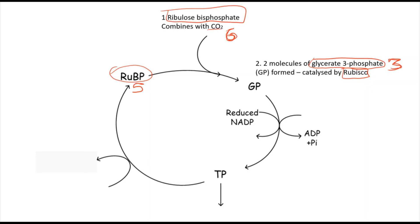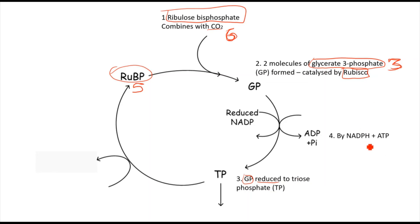The GP is then reduced to triose phosphate (TP). It's reduced by NADPH — the reduced NADP — and the energy is provided by the hydrolysis of ATP. Remember, this NADPH and ATP come from the light-dependent reaction.